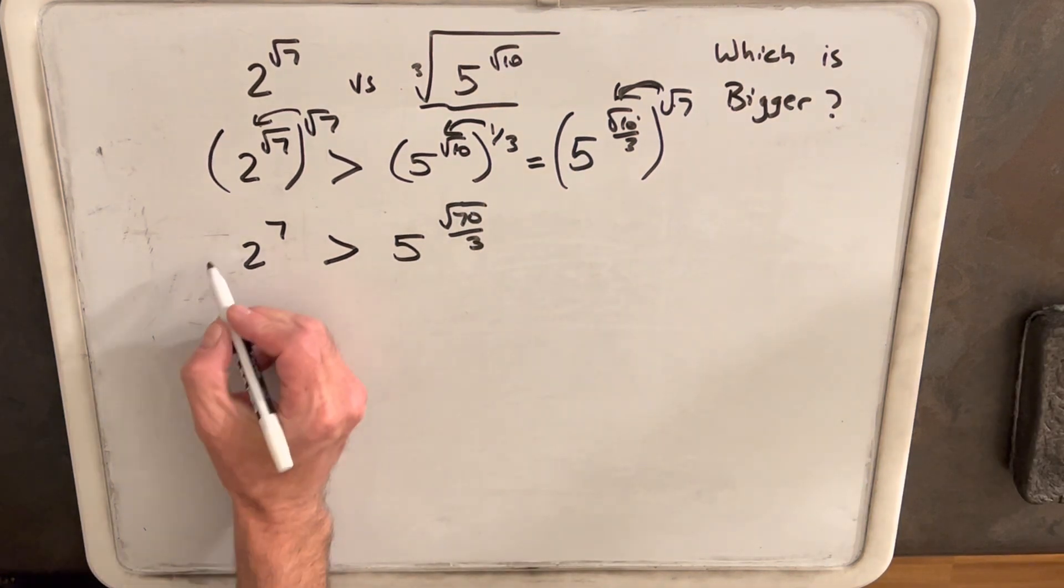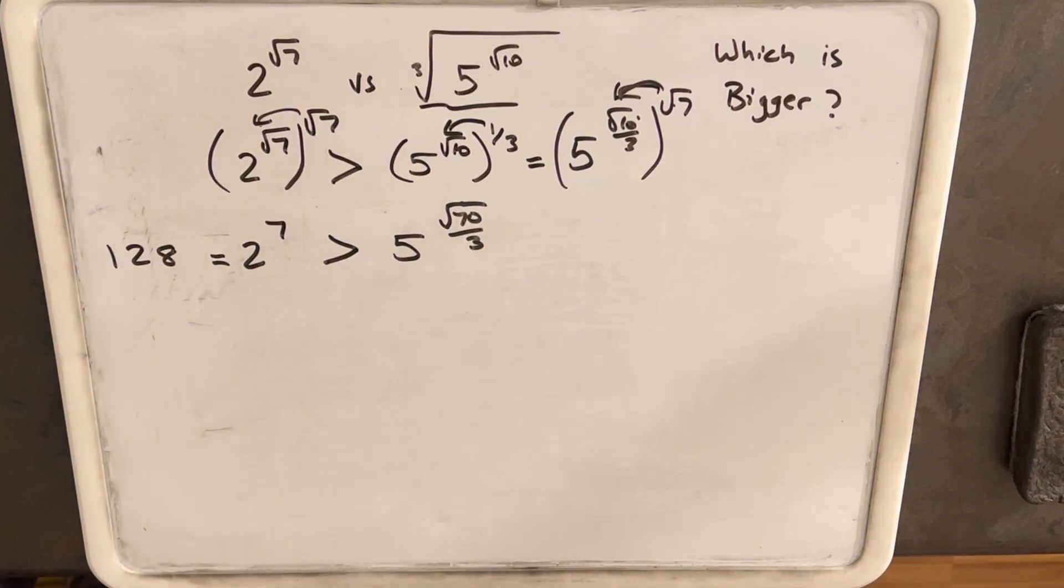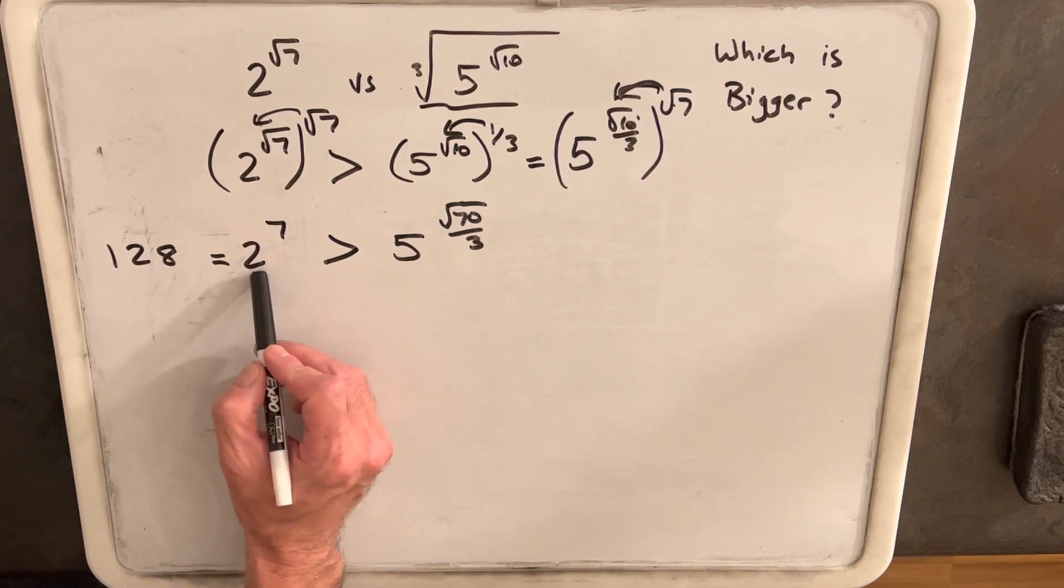And from here, I can notice that 2 to the 7th is 128. And typically, in a which is bigger problem, we want to find a point of comparison, right? We want to find a power of 5 that's similar to our power of 2.